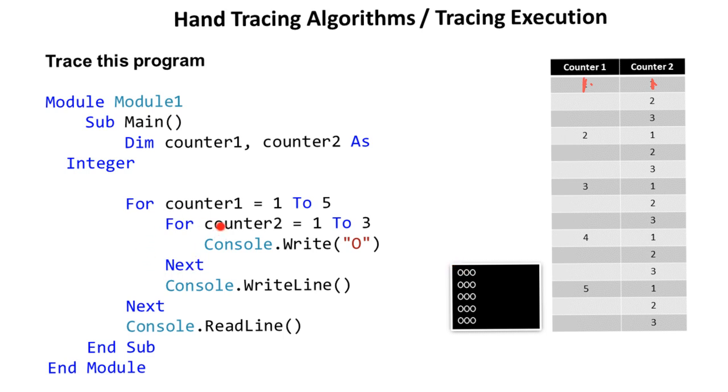Next, we come back here. Counter2 has now gone up to two. So we update our trace table and we now say that this counter is two. And then it prints another O. And you can see that here. It goes round again and counter2 gets updated to three and it prints another O. So we now end up at the end here for counter1 to 3. And you can see the counter is three. We say next and we do Console.WriteLine, so we move down a line.